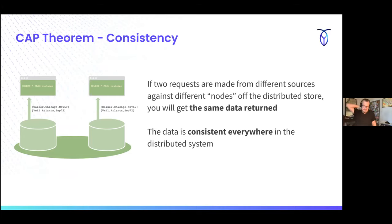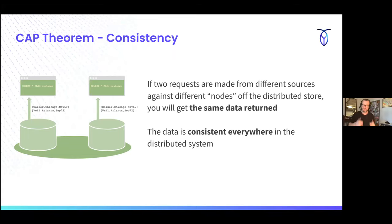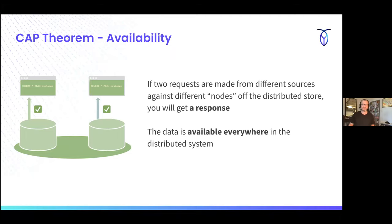Let's talk about consistency. If two requests are made from two different users against different nodes, they're going to get the same data returned. Here we have two users — they're both asking 'select star from customer' and you're seeing two records come back. It's going to be the same no matter which node or which component of that distributed system is asked. That's consistency. That's a really difficult thing to do because how are you synchronizing data, how are you dealing with differences, can they all actually surface reads and writes? There are lots of different complexities here.